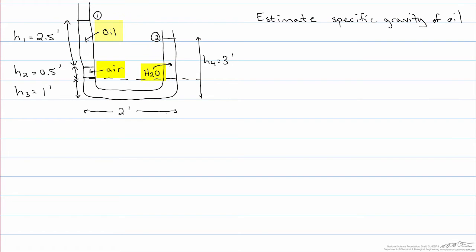The three fluids are oil, water, and air. We have the heights of the columns of each of the fluids. The water is connected from one side to the other, so there are a couple of different ways that we can solve this.